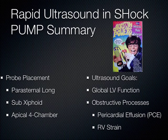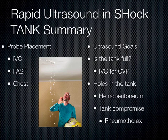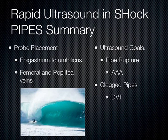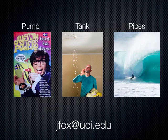In summary, the RUSH exam covers pump, tank, and pipes. The pump involves three cardiac views evaluating global LV function and obstructive processes like pericardial effusion or RV strain. The tank involves IVC diameter as a non-invasive CVP measure, the FAST exam for free fluid, and pneumothorax assessment. The pipes involves AAA evaluation from the epigastrium to the bifurcation and DVT assessment at the femoral and popliteal regions. In the heat of battle, just remember: pump, tank, and pipes — and you can complete this study quickly in unexplained hypotension.